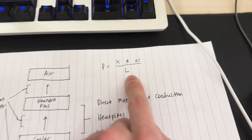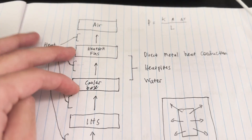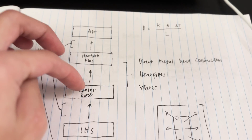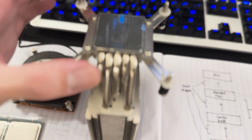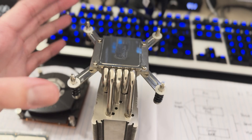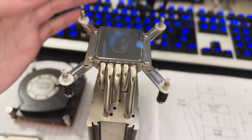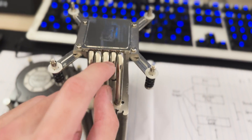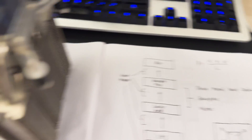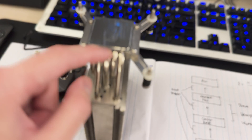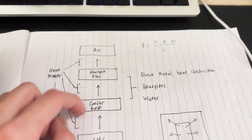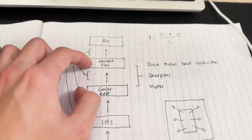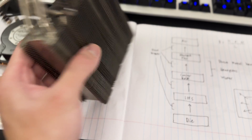You want the heatsink fins as close as possible to ambient temperature in order to pull heat from the cooler base as effectively as possible, because a large temperature delta between the cooler base and heatsink fins lets you pull more heat from the base. You can't really change the contact area between cooler base and heatsink fins — if you're using a heat pipe, its thermal conductivity and contact area with the base are fixed by the manufacturer's specifications. So all you can really do is increase the delta temperature between the cooler base and the heatsink fins.